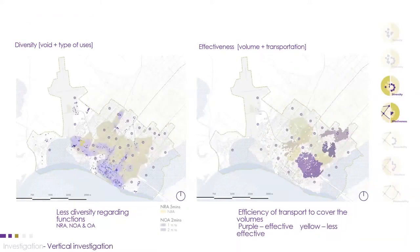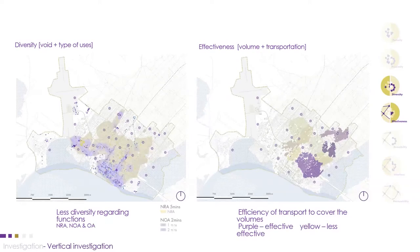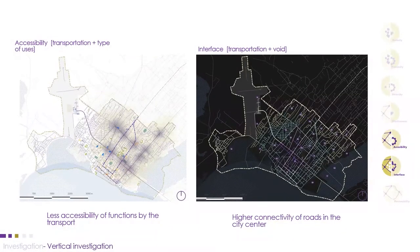The diversity map is an overlay between the void map and the type-of-uses map. We categorized key functions into necessary, regular-necessary, optional, and optional activities. The downtown has a high concentration of necessary-optional activities. The effectiveness map shows the efficiency of transportation coverage over existing volumes — purple areas are effective compared to yellow-shaded areas.